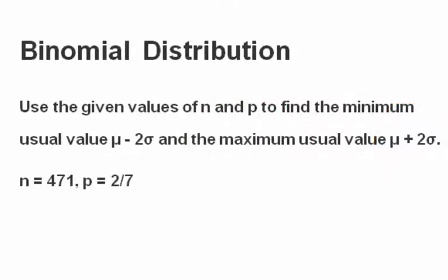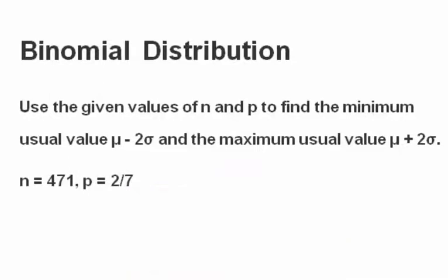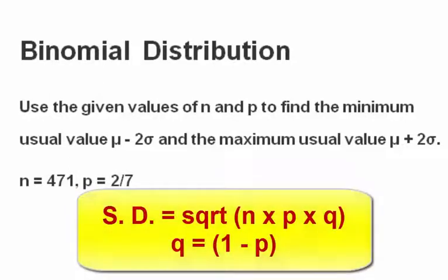We're going to use two formulas for this. The first is the formula for the mean of a binomial distribution, which is simply n times p, and the formula for the standard deviation for a binomial distribution, which is the square root of n times p times q, where q is 1 minus p.